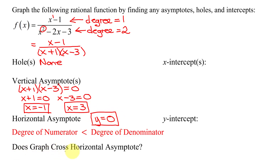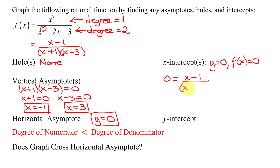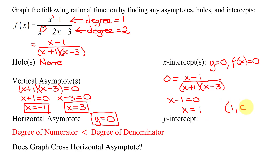Does the graph cross the horizontal asymptote? I'll answer that when I find the x-intercepts, because for x-intercepts y equals 0, or f(x) equals 0. Setting our function equal to 0, we get 0 equals (x minus 1) divided by (x plus 1)(x minus 3). This fraction equals 0 when the numerator equals 0 without simultaneously making the denominator 0. So x minus 1 equals 0, giving x equals 1. My x-intercept is the point (1, 0).